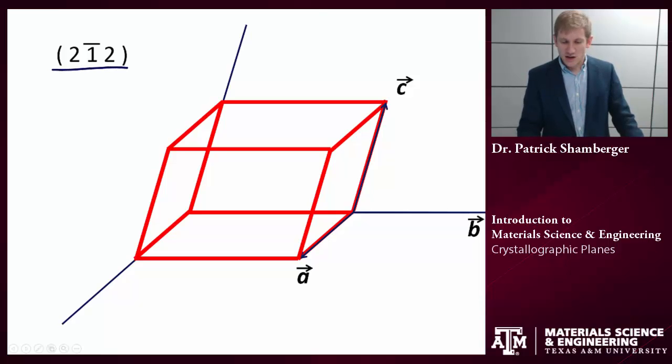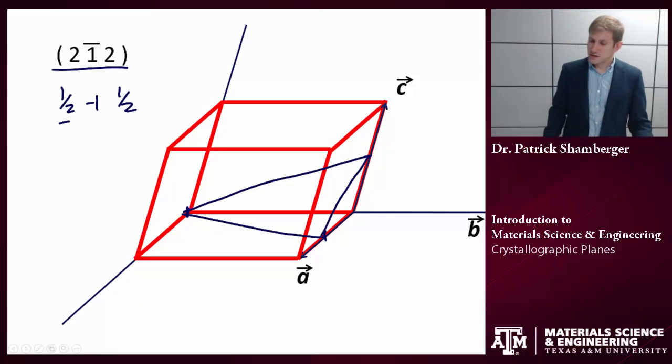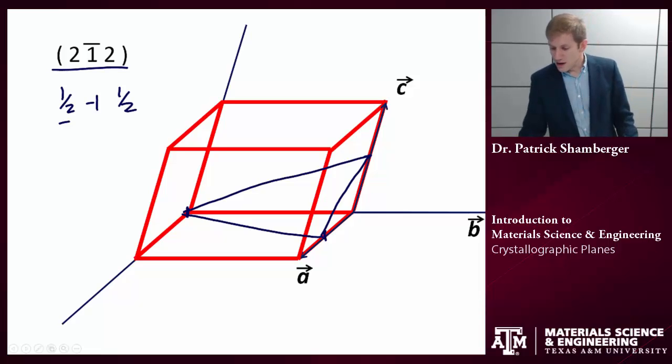So we're going to do the exact opposite of the process from before. So I know the final notation. Essentially, I need to take the inverse of these. So the inverse of this is one-half, negative one, one-half. And then these are now the intercepts. So the intercept with the a-axis is one-half. The intercept with the b-axis is negative one. And the intercept with the c-axis is one-half. And so this plane is going to look like this. Again, you only need three points to define a plane. And because I shifted that origin at the beginning, it's a little bit easier because now it's all falling within that original unit cell.